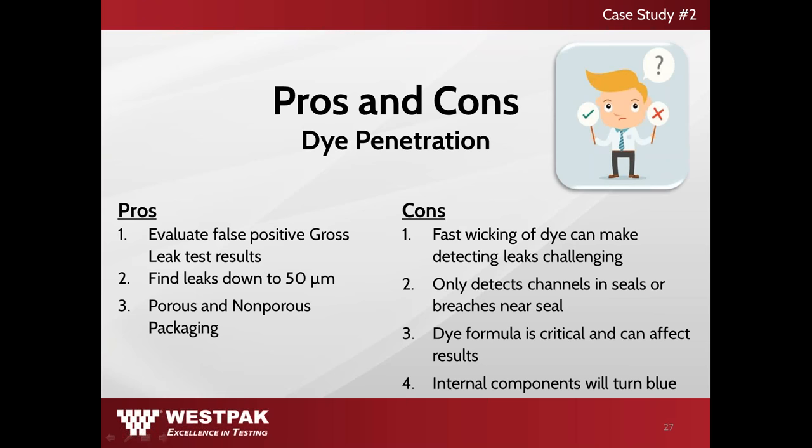As the list of pros are similar to gross leak detection, one major advantage to dye penetration testing is the ability to evaluate a false positive failure from gross leak testing. Some cons include: one, the fast wicking of dye can make detecting leaks challenging; two, failures such as channels in seals or breaches near the seal can be detected; three, the dye formula is critical and can affect the results; and four, the internal components will turn blue.